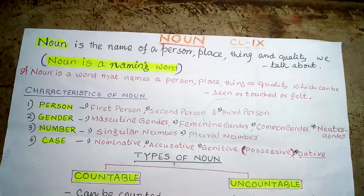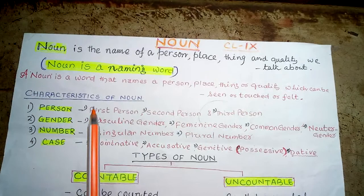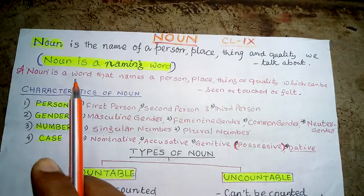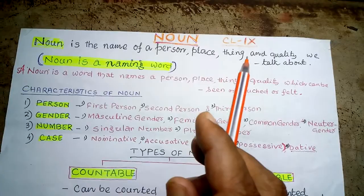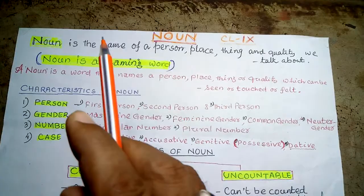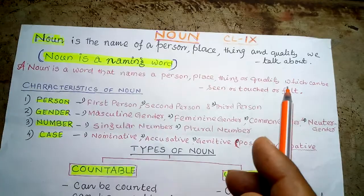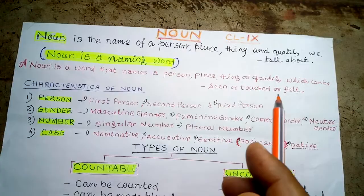What is a noun? A noun is the name of a person, place, thing, and quality we talk about. The word 'name' is important here. In short, a noun is a naming word — a word that names a person, place, thing, or quality which can be seen, touched, or felt.